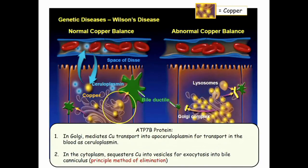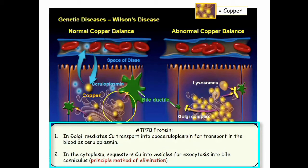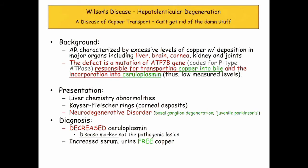Here's the picture: copper normally goes into the bile and attaches to apoceruloplasmin, forming ceruloplasmin in circulation. In Wilson's disease, copper doesn't get into the bile and doesn't get into the circulation — it damages the liver. Neurodegenerative involvement: check. Decreased ceruloplasmin and increased serum and urine free copper — those are all straightforward markers.